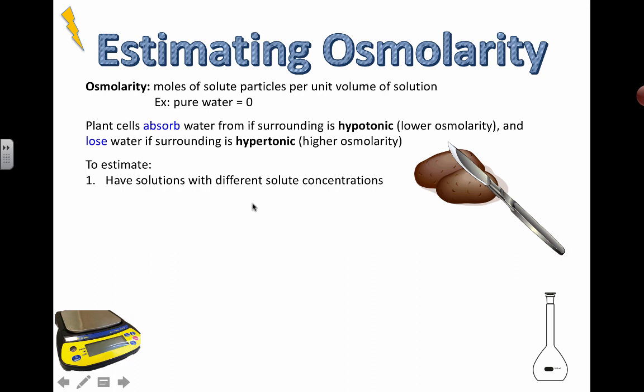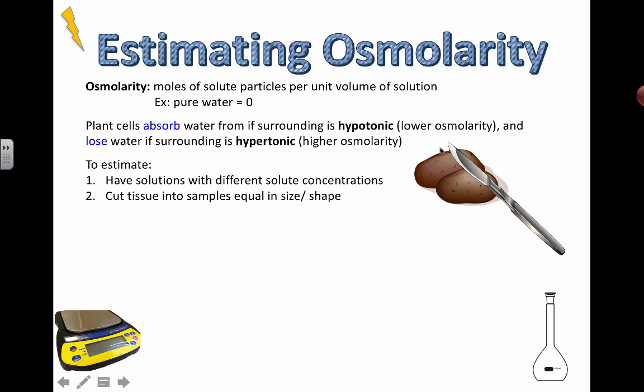To estimate what's going to happen, you set up an experiment. The basic setup is you have a bunch of different beakers with different solutions prepared with different solute concentrations that you've calculated — so one could be 0.2 moles per liter, one could be 0.3 moles per liter. You could have 5, 6, 7, or 8 of these different pre-prepared solutions. You're trying to figure out the actual osmolarity of the potato tissue.